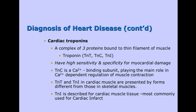The marker we really want to talk about is cardiac troponins. This is a complex of three proteins bound to a thin filament of muscle: Troponin T, Troponin C, and Troponin I. They are very sensitive and very specific for myocardial damage. Troponin C is a calcium-binding subunit playing the main role in calcium-dependent regulation of muscle contraction. Troponin T and I are forms that are different than in skeletal muscle. Troponin in general is the best protein to detect heart disease — it increases within about four hours of a heart attack and stays elevated for seven to ten days.